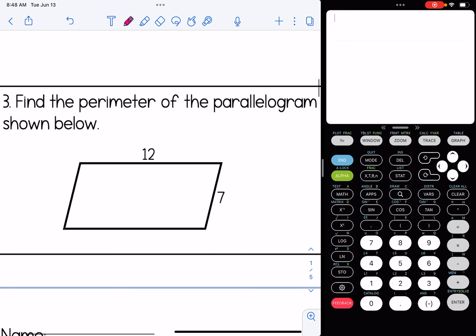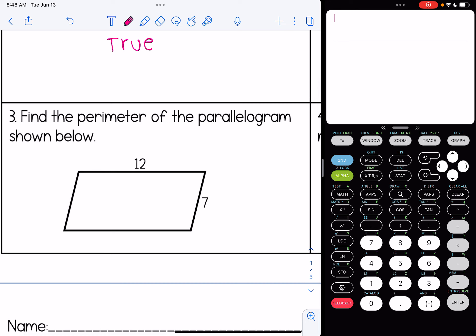Let's look at some problems with numbers here. So number three, find the perimeter of the parallelogram shown below. Well, opposite sides are equal to one another or congruent. So I know that these missing sides are 7 and 12. And I'm going to just add up 12, 7, 12, and 7. And I get that my perimeter is 38.